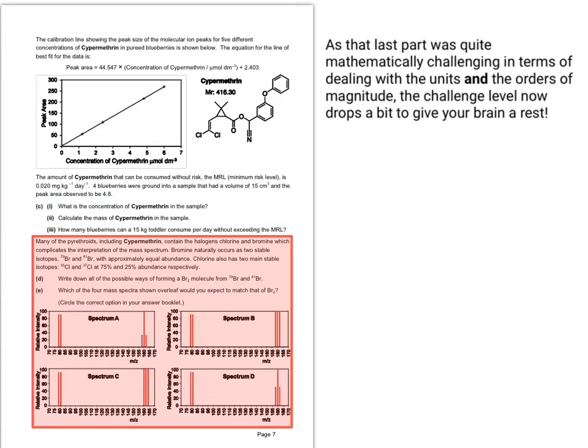Part C was quite hard in terms of keeping on top of the units and orders of magnitude. The next part is a little bit easier — it's a mass spectrum part — but you still need your brain in good working order because it's still the Cambridge Chemistry Challenge paper. It now switches to talking about the fact that there are halogens inside many pyrethrin molecules, for example the two chlorine atoms found in cypermethrin.